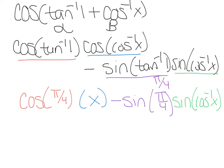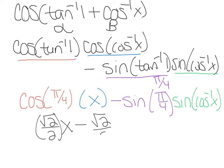Let's clean this up a little bit. Cosine of π/4 is √2/2, so I now have √2/2 times x, minus sine of π/4 which is √2/2, and I still have this ugly nasty thing to deal with — sine of arccos of x.